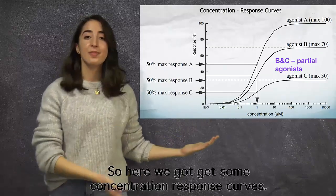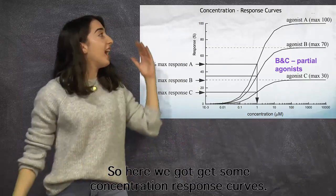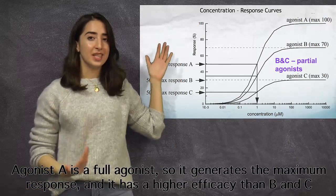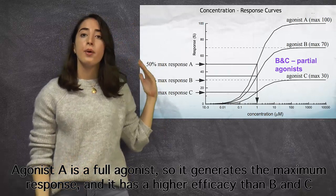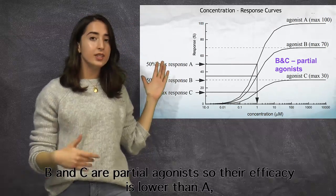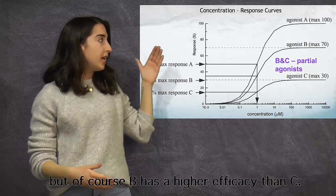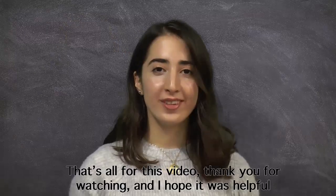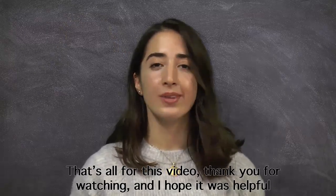Here we have some concentration-response curves again. Agonist A is a full agonist, so it generates the maximum response and has higher efficacy than B and C. B and C are partial agonists, so their efficacy is lower than A, but B has a higher efficacy than C. That's all for this video — thank you for watching and I hope it was helpful.